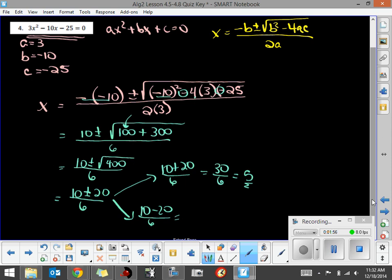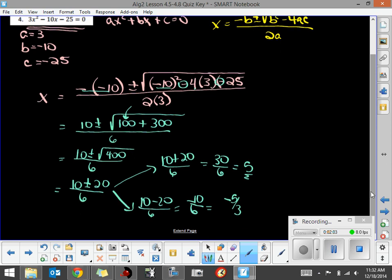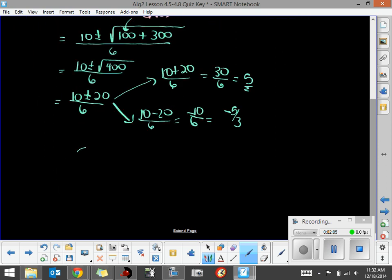And if I do 10 minus 20, it's negative 10 divided by 6, which reduces to negative 5 thirds. So if we put our answers in our solution set, we'd have negative 5 thirds and positive 5. That's running through the quadratic formula to find the answers to that quadratic equation.